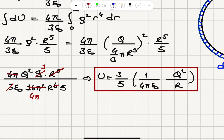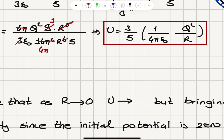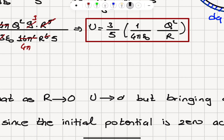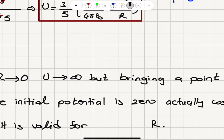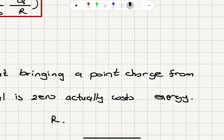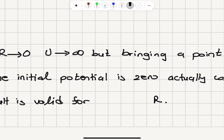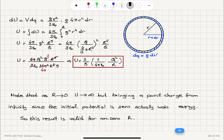This is the potential energy of the configuration. Note that as R → 0, the potential energy diverges to infinity. However, when bringing the very first point charge from infinity to a zero-charge distribution, the initial potential is 0 so it costs no energy. Therefore, this result is valid only for a non-zero R — it does not apply to a point charge.